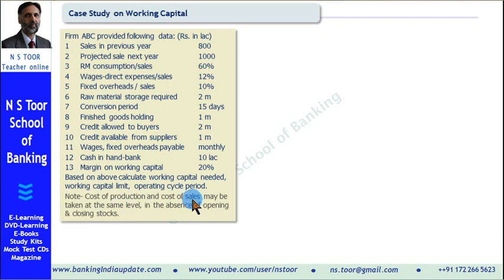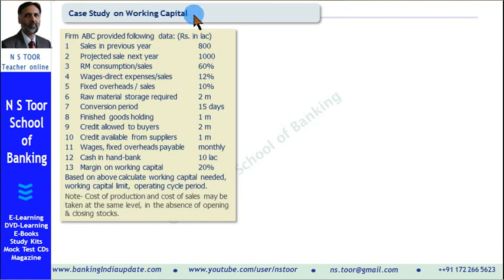First of all, what is meant by working capital? Working capital means the amount of current assets required by a business firm to achieve the required sales target. Here the sales target is 10 crore. The current assets will be in the form of raw material, stock in process, finished goods, debtors, etc.